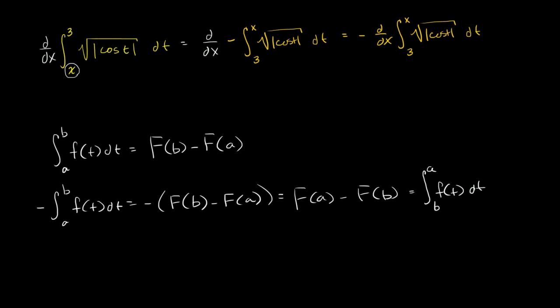This is going to be equal to, we deserve a drum roll now, this is going to be equal to the negative. Can't forget the negative. And the fundamental theorem of calculus tells us that that's just going to be this function as a function of x. So it's going to be negative square root of the absolute value of cosine of not t anymore, but x. And we are done.